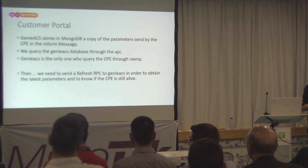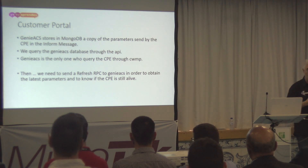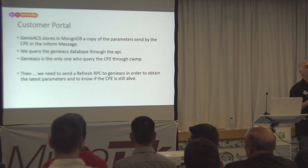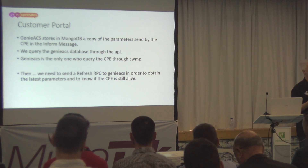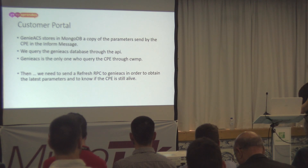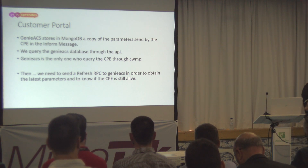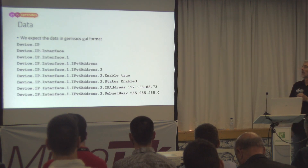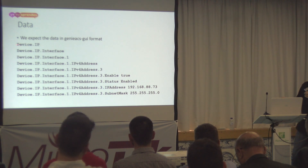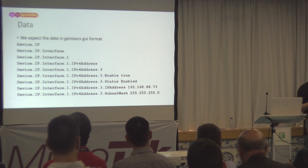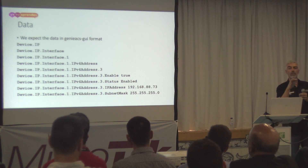This is a cached copy, so I might see some Wi-Fi clients that are not currently connected to our system. We start every transaction with a refresh — GetParameterValues — to have the client send a fresh copy of the information to the server, and then we query the server to get the new copy. In the GenieACS graphical user interface, the values are offered in a key-value format.